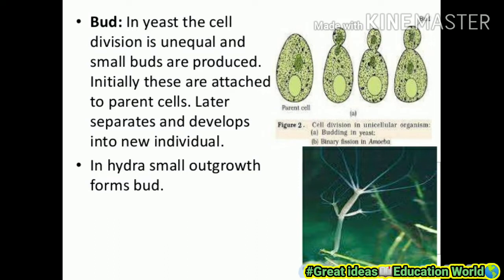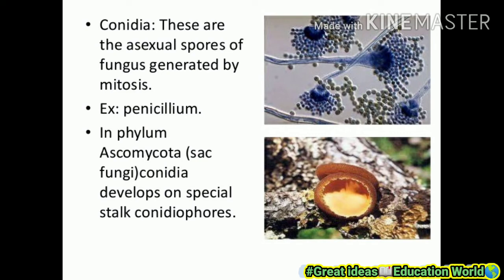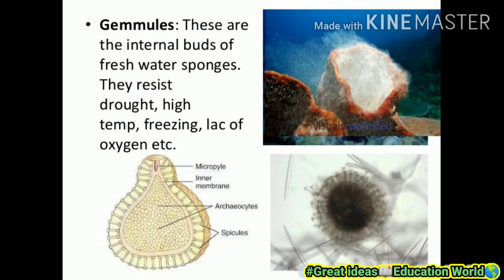The bud divides and a new baby hydra is developed. Next, we understand about conidia. These are the asexual spores of fungi generated by mitosis. Example: Penicillium, in phylum Ascomycota — the sac fungi. Conidia develop on a special stalk called conidiophores. Conidia example is Penicillium, and the structure is conidiophore. Next is gemmules.